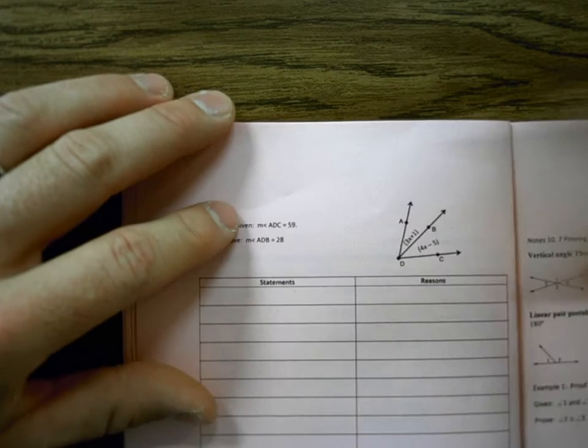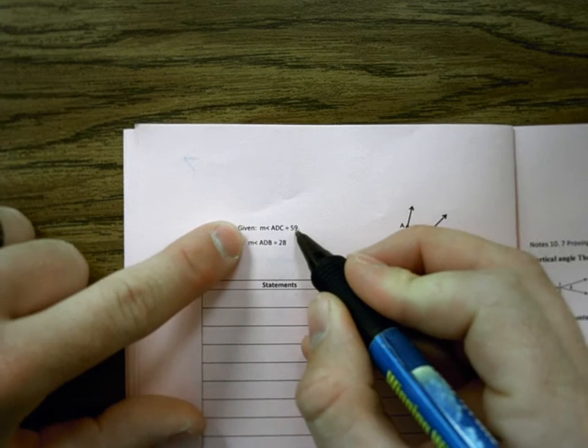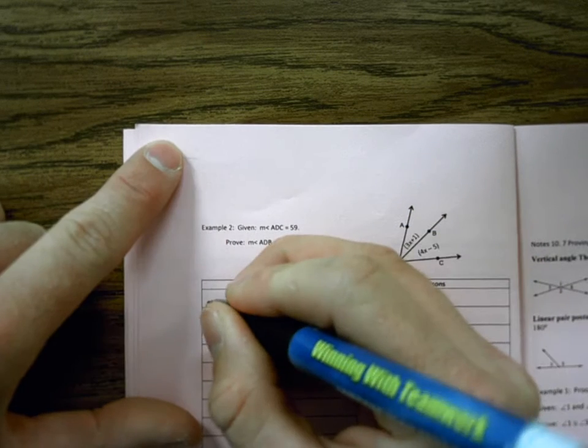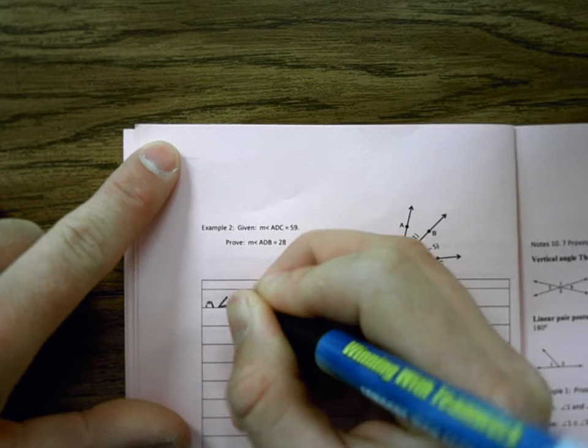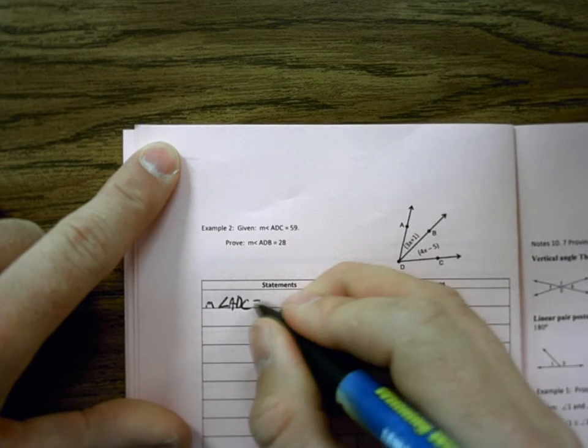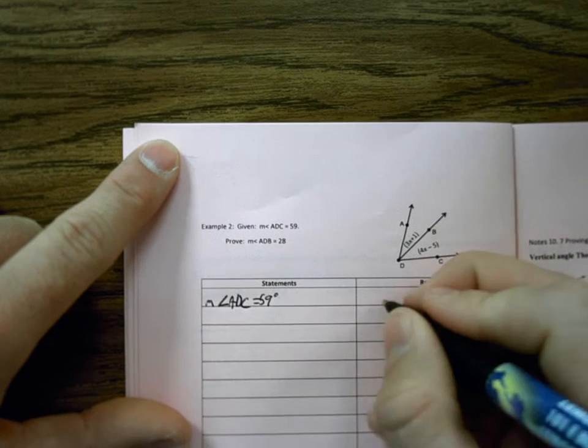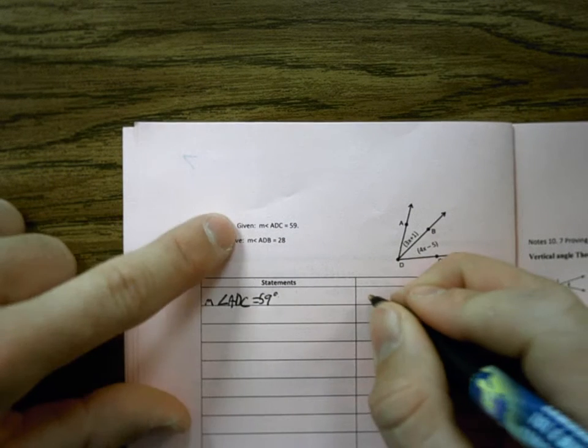I've always had you do the star note for it, the given. You restate the given. So the measure of angle ADC, bless you, equals 59 degrees. The reason for this is because that is given to us.